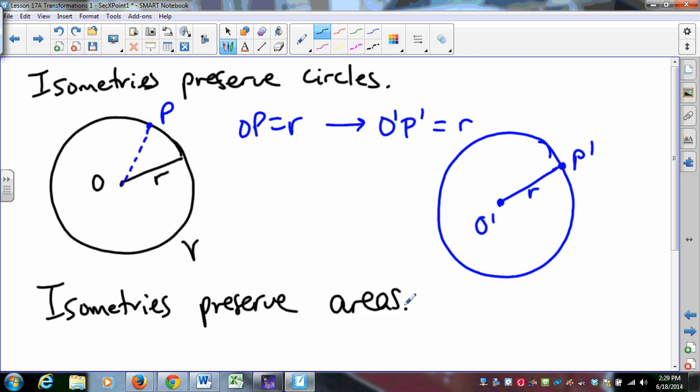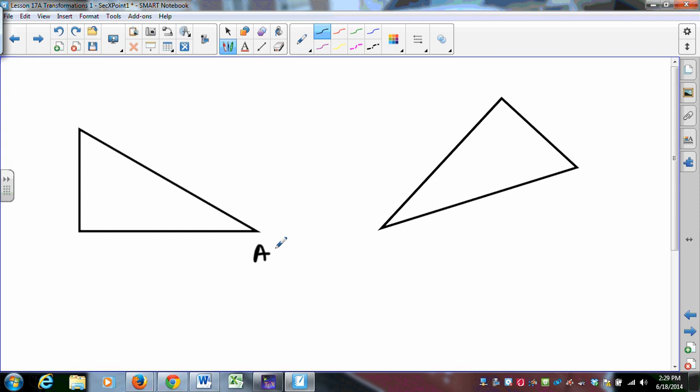If I have two triangles, triangle ABC and triangle DEF. If I have two triangles, and the triangles are congruent, then there is an isometry that maps this one onto this one. And that isometry is the composition of either two or three reflections. If I have two congruent triangles, I can get from one to the other by two or three reflections max.